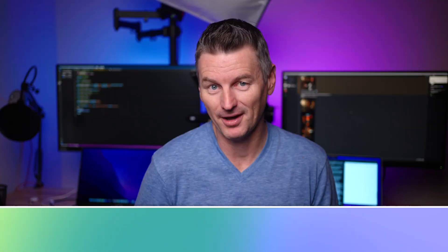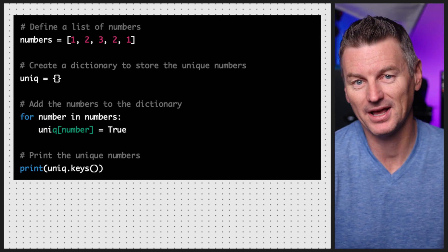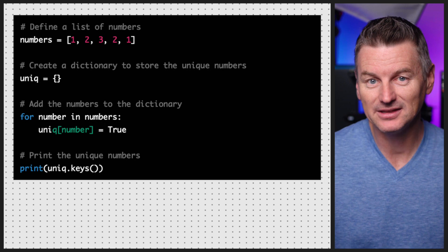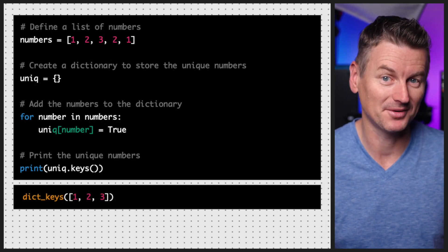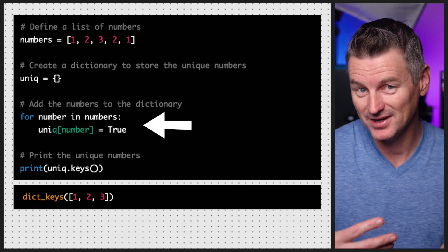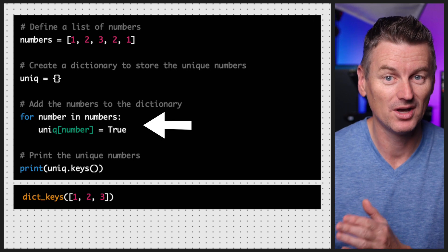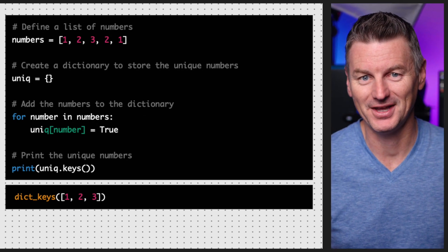Sets are a special type in Python that represent a collection of unique elements, and dictionaries can be used as sets because they only allow one entry for each key. This means that if you try to add the same key to a dictionary more than once, the second and subsequent entries will be ignored. Looking at the output, we can see it only contains the unique numbers from the numbers list, because the subsequent occurrences of each number were ignored.